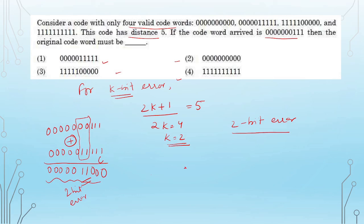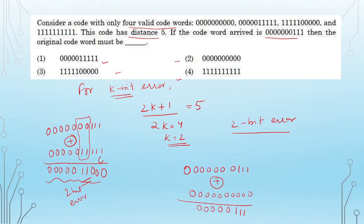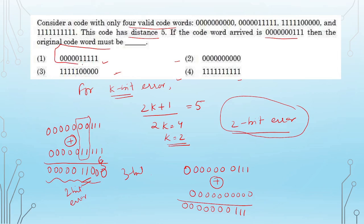For the second option, doing XOR with the arrived code word gives a result with 3-bit errors. Since we determined from the code distance that exactly 2-bit errors occurred, the second option is eliminated. Checking the third option similarly — whichever option gives exactly 2 differing bits when XORed with the arrived code word is the original code word. The first option matches, so the original code word is the first option, identified by which corresponding bits changed.